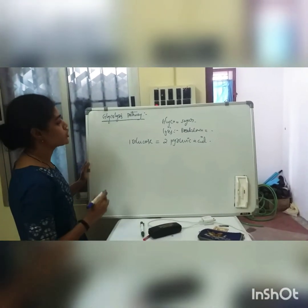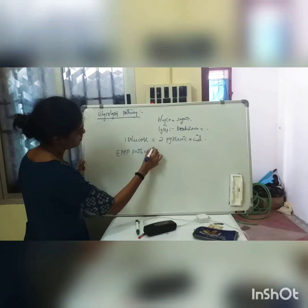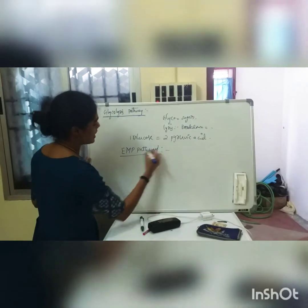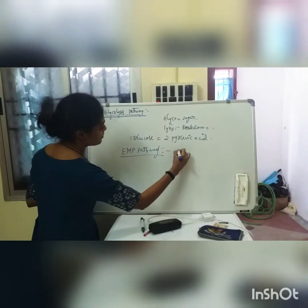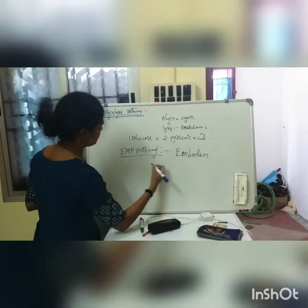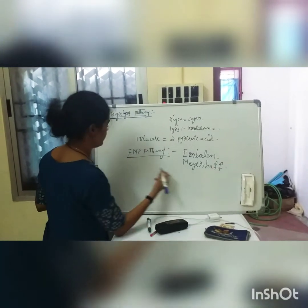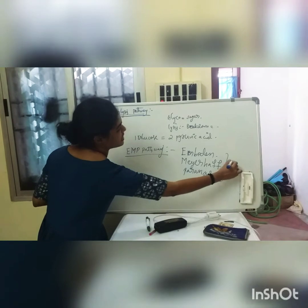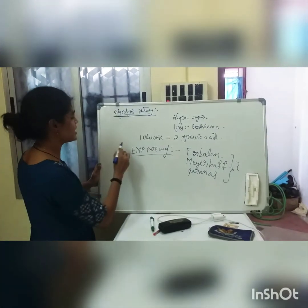This glycolysis pathway is also termed as the EMP pathway. Who introduced the term glycolysis? The scientists Embden, Meyerhoff, and Parnas introduced it, and this pathway is referred to as the EMP pathway after their names.